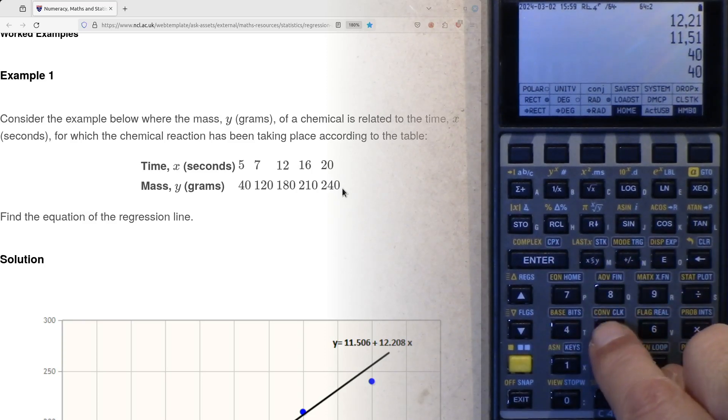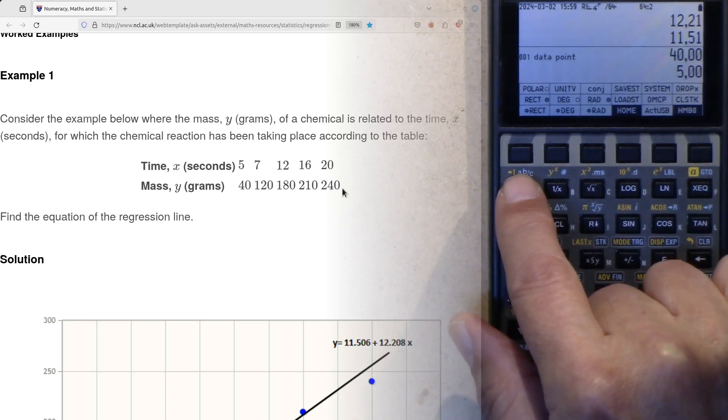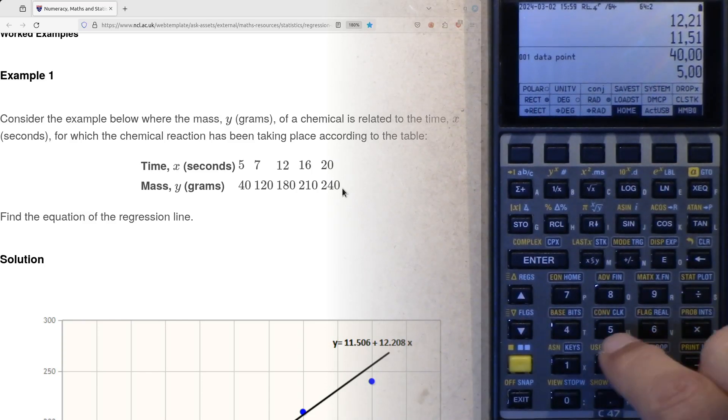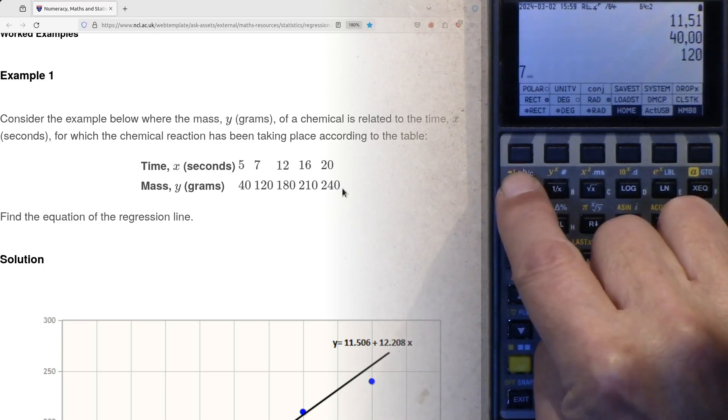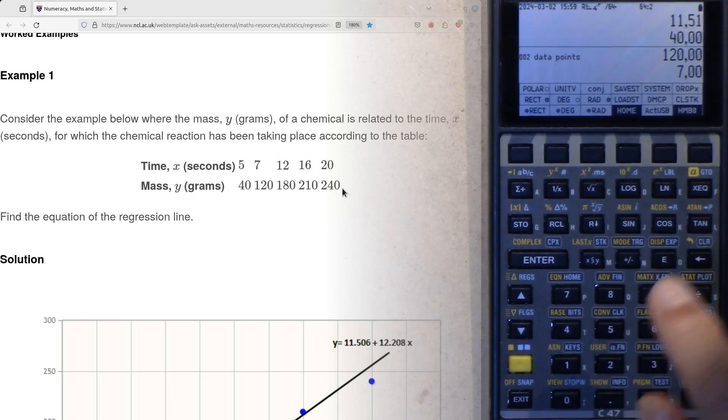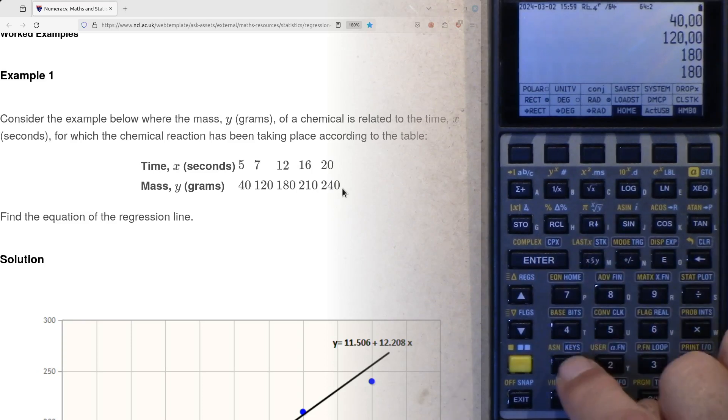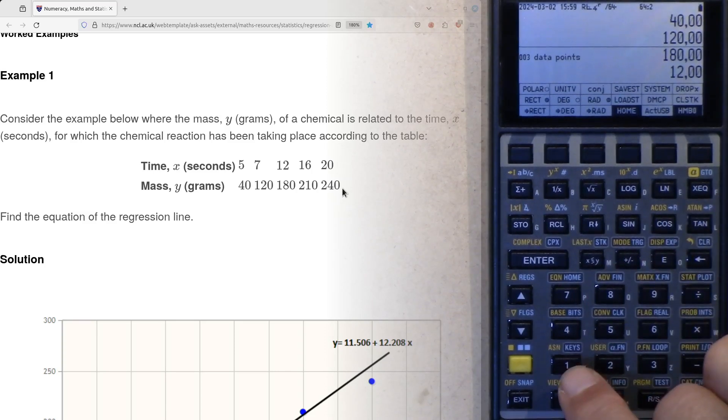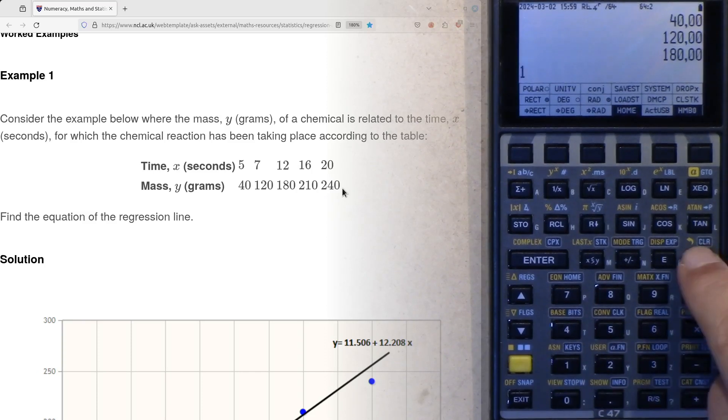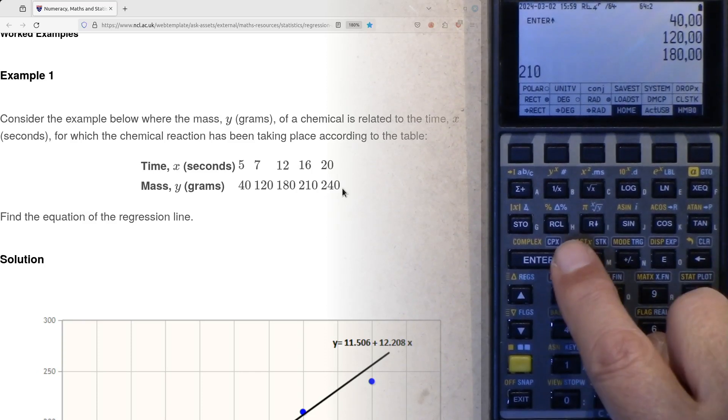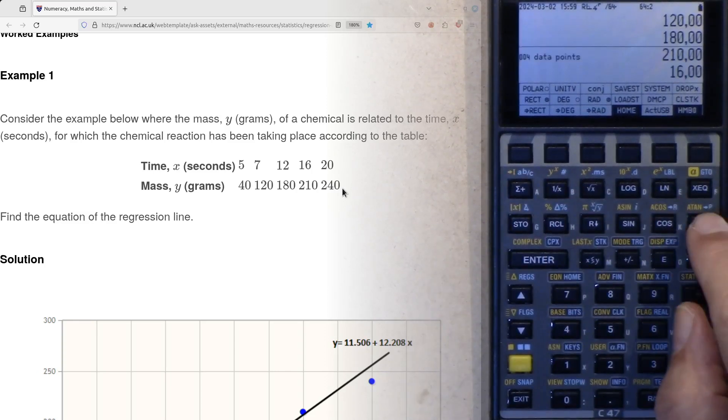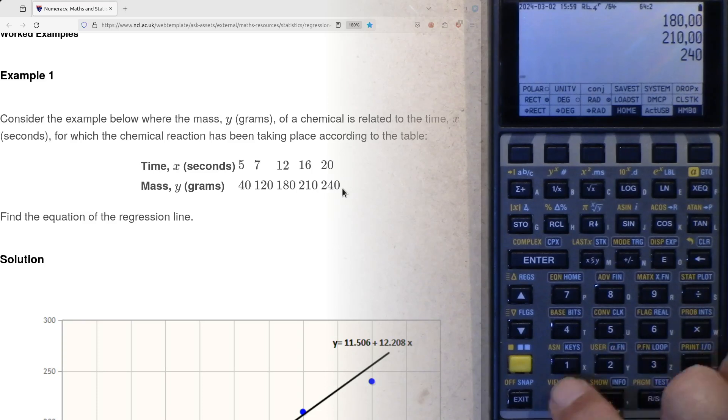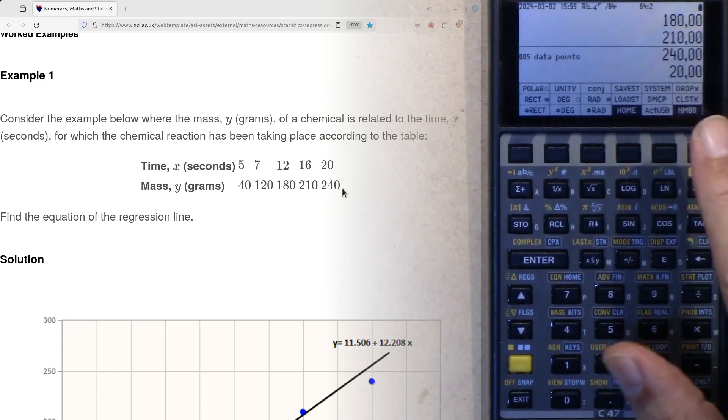40, enter 5, sigma. Now we have the first data point. 120 and 7, 120, 7, sigma plus. 180, enter, 12, sigma plus. Our third data point. And 200 and oops, 210, 16. And 240 and 20. So now we have our set of data.